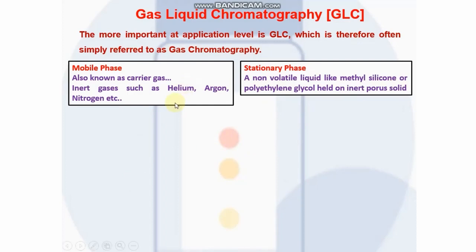The carrier gas or mobile gas should be chemically inert, cheap and readily available, and should be suitable for the detector. Generally, inert gases such as helium, argon, and nitrogen are used. The stationary phase in GLC is a non-volatile liquid like methyl silicone or polyethylene glycol held on an inert porous solid.